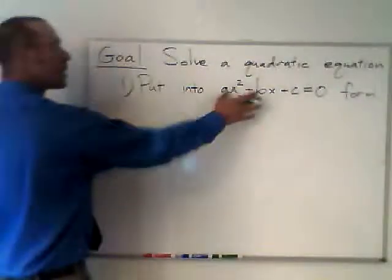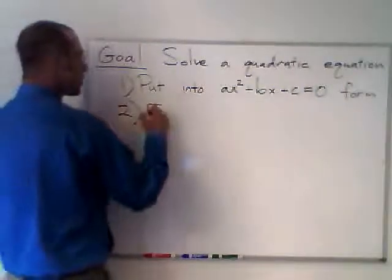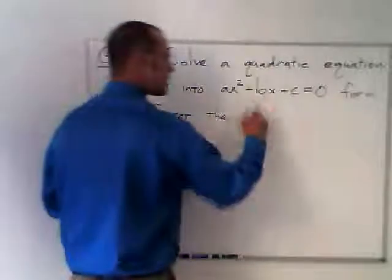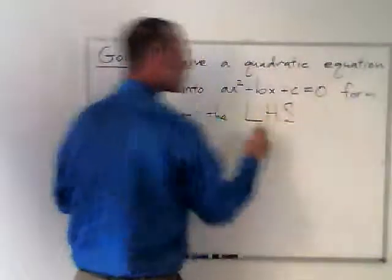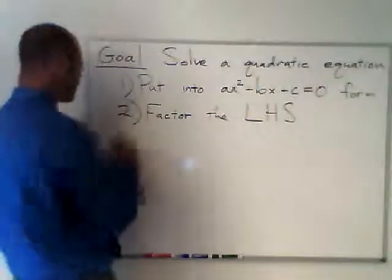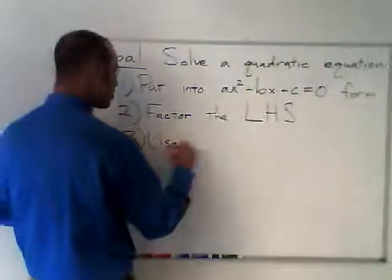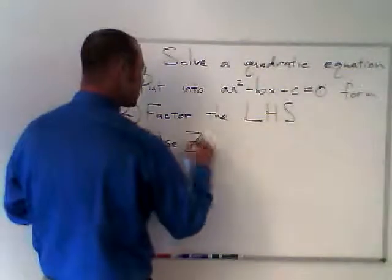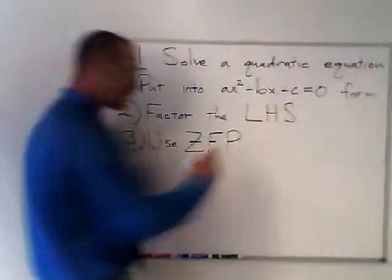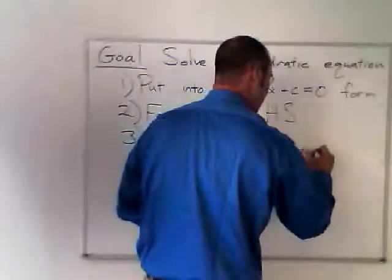So we'll rearrange what we're given, unless it's already like that. The second step is to factor the left-hand side. So the left-hand side of this equation is the quadratic expression. The third step is to use ZFP. That's the zero factor property.